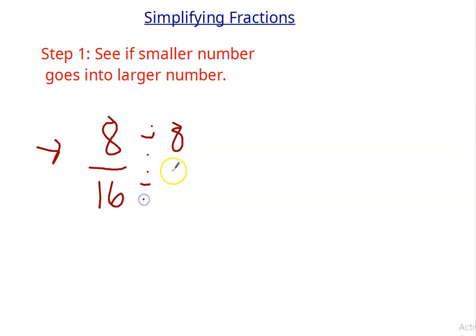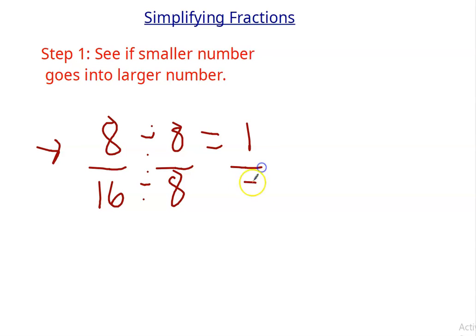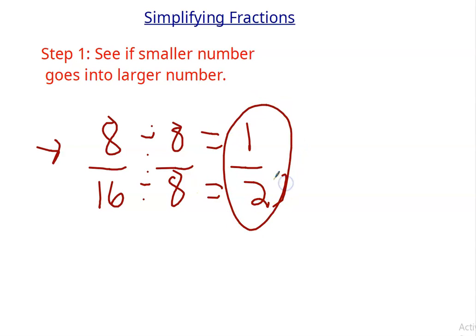What you're really doing is dividing by 1, because 8 over 8 is 1. And to get an equivalent fraction, you divide by 1. So 8 divided by 8 is 1. 16 divided by 8 is 2. So 1 half is my simplified fraction. Let's look at a couple more.